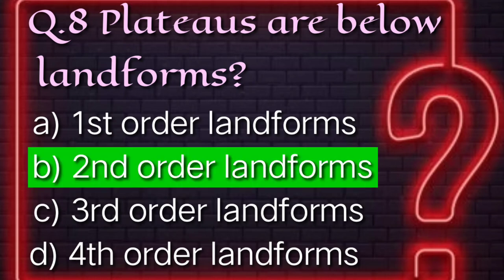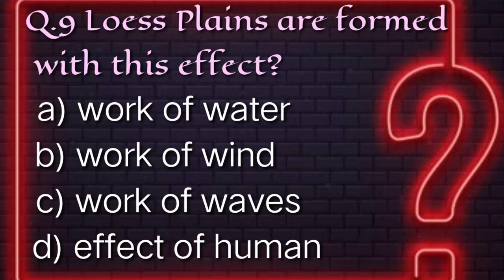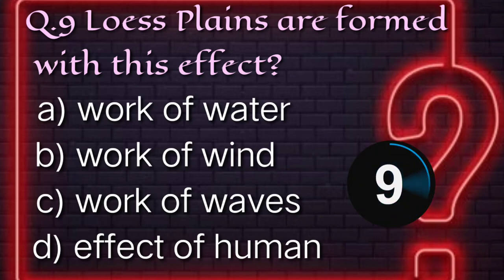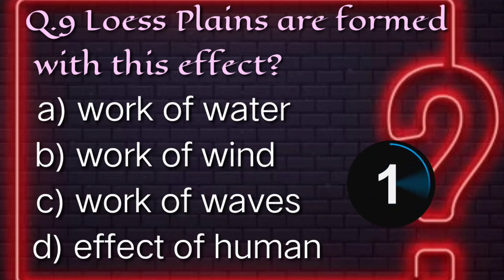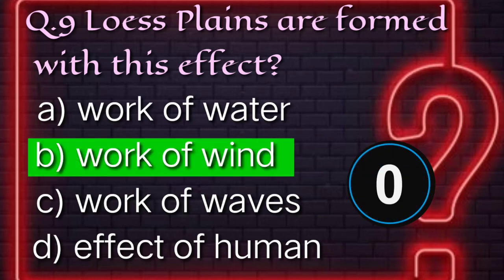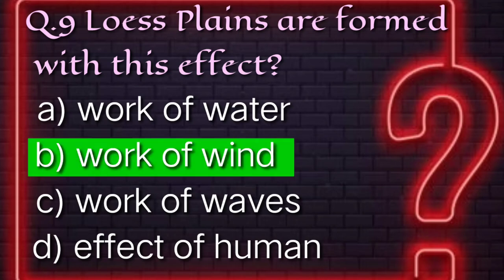Answer: Second order landforms. Question number nine: Loess plains are formed by which effect? Answer: The work of wind.